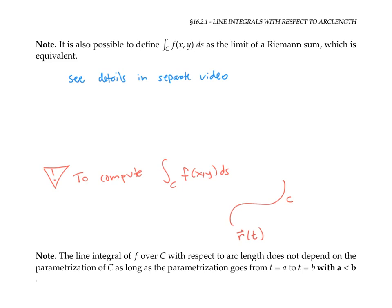Well, fortunately, you do get the same answer. The line integral of f over C with respect to arc length does not depend on the parameterization of C, as long as the parameterization goes from t equals a to t equals b for some numbers a and b with a less than b.